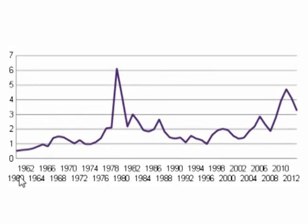This is a graph of the wheat to silver price ratio from 1960 through 2013. In 1960, wheat was $1.76 a bushel and silver was $0.91 per ounce, giving a wheat to silver price ratio of about 0.5 — one ounce of silver bought about half a bushel of wheat. In 2013, wheat was $7.32 a bushel and silver was $23.79 per ounce, giving a wheat to silver price ratio of about 3.25 to 1. So in 2013, one ounce of silver bought three and a quarter bushels of wheat — over six times as much wheat as it did in 1960.